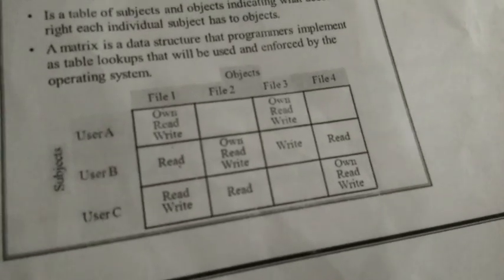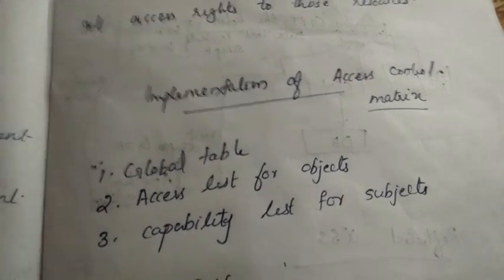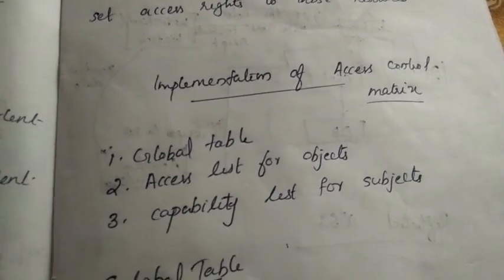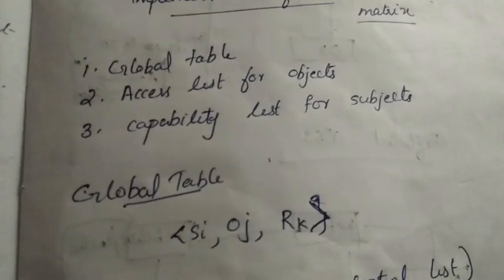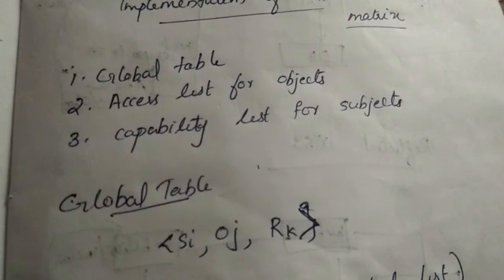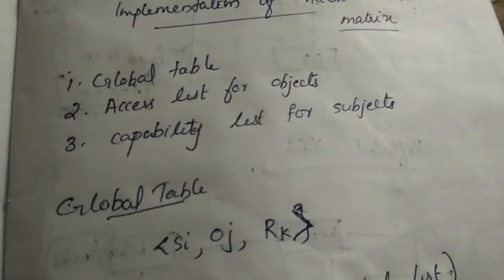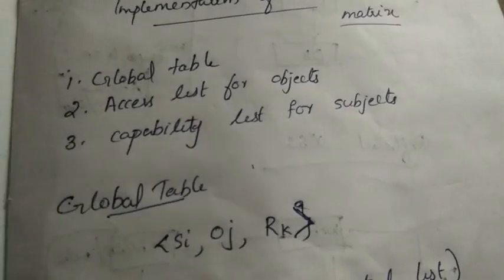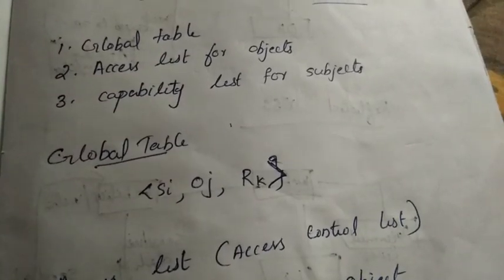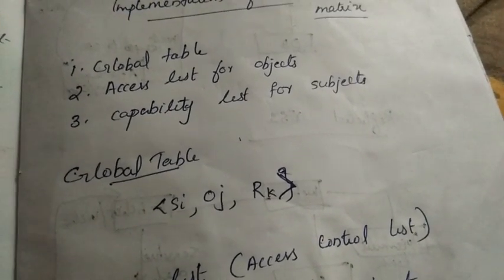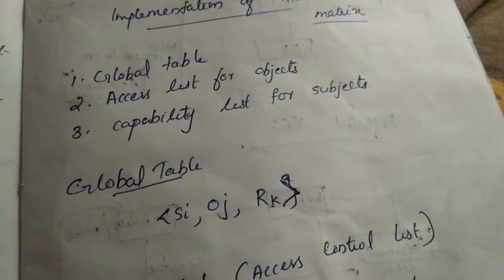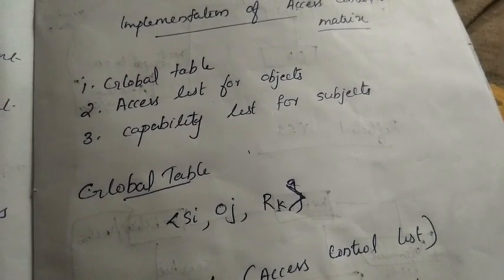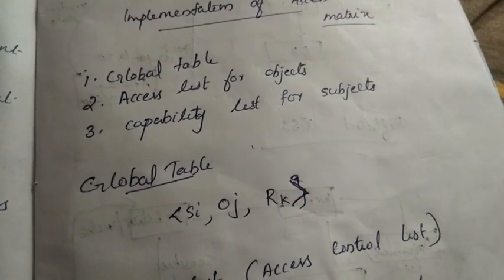There are three methods to implement access control. First is Global Table, second is Access List for objects, and third is Capability List for subjects. Global Table is the combination of subject SI, object OJ, and access right RK. For example: user1, file1, read means user1 can read file1.